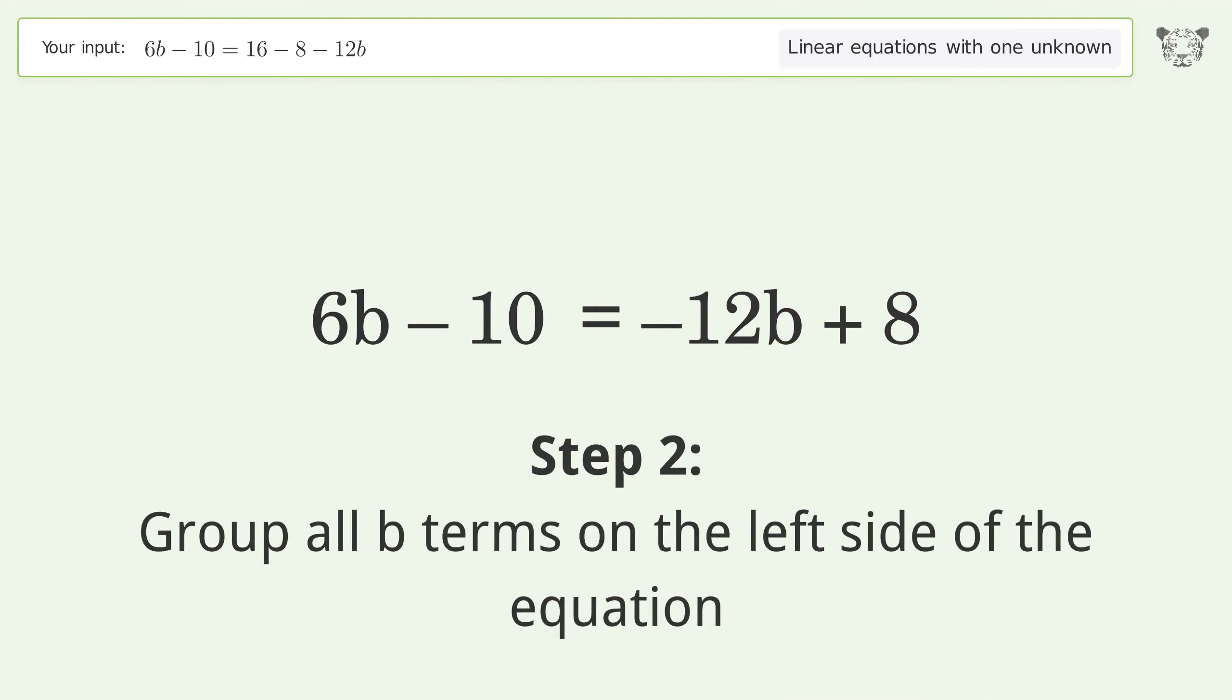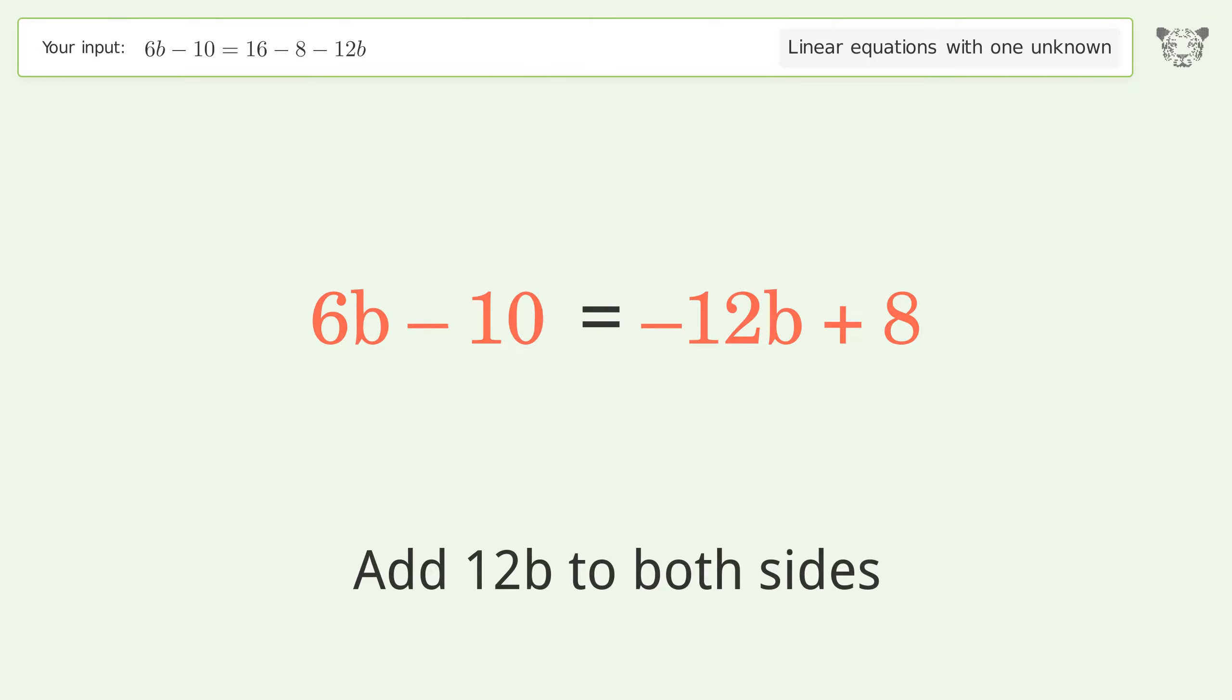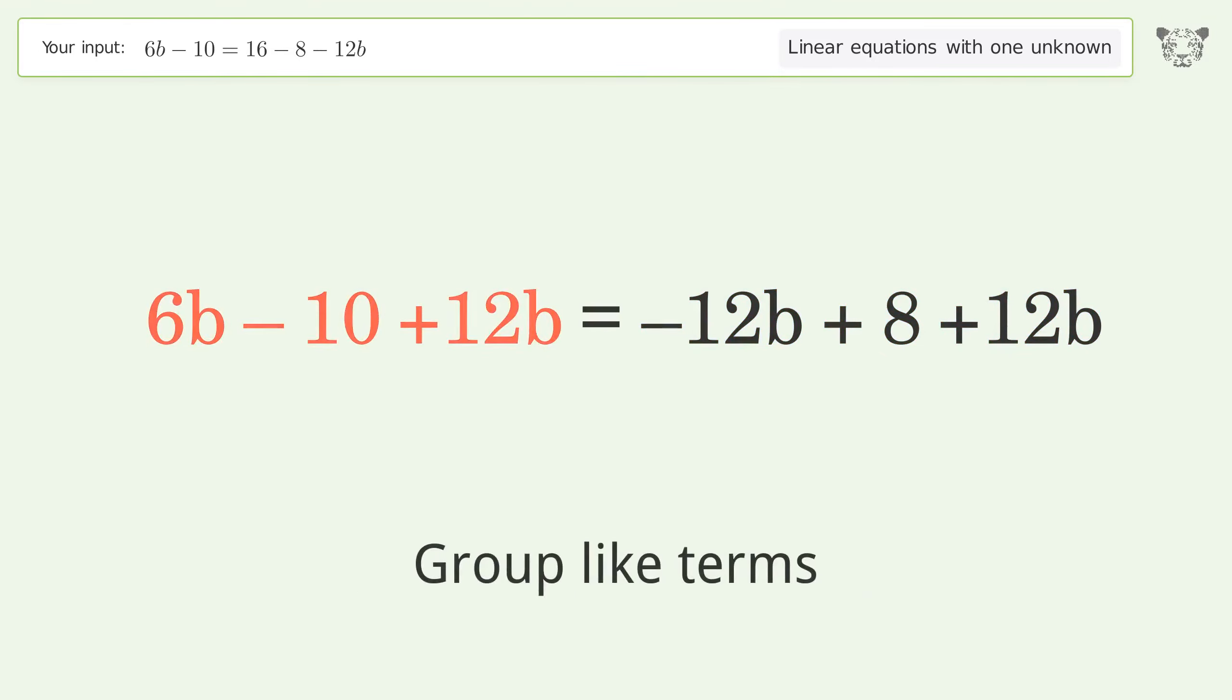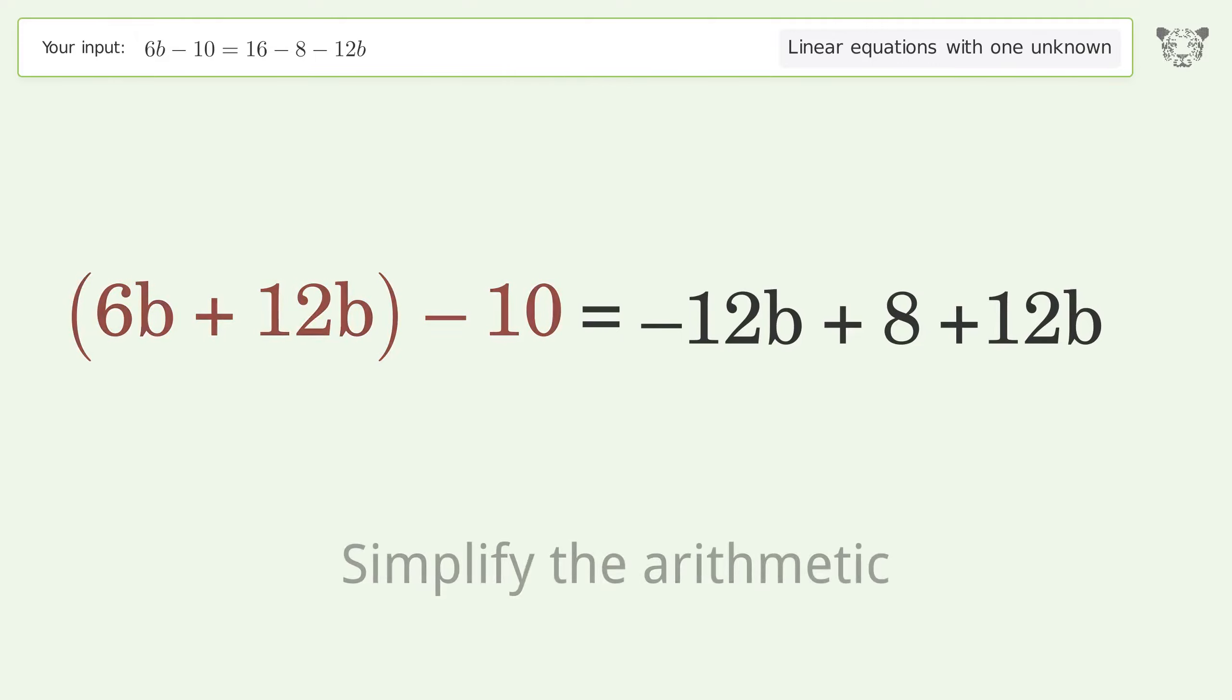Group all b terms on the left side of the equation. Add 12b to both sides. Group like terms. Simplify the arithmetic.